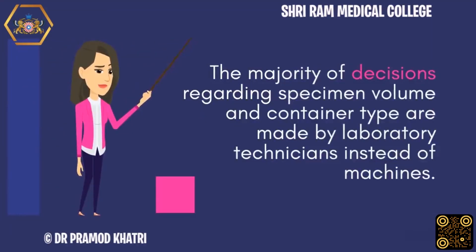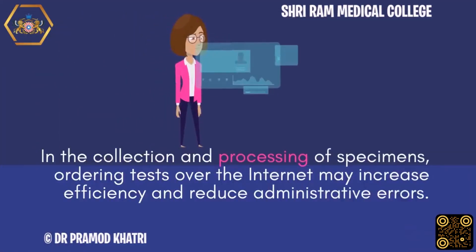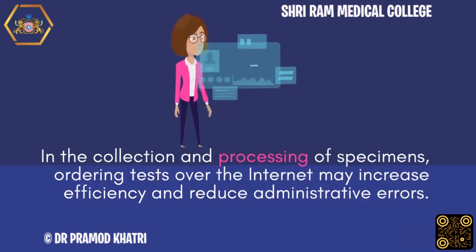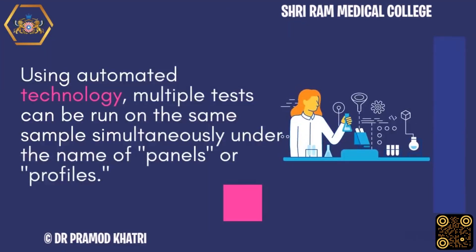The majority of decisions regarding specimen volume and container type are made by laboratory technicians instead of machines. In the collection and processing of specimens, ordering tests over the Internet may increase efficiency and reduce administrative errors. Using automated technology, multiple tests can be run on the same sample simultaneously under the name of panels or profiles.